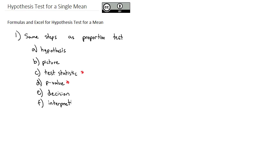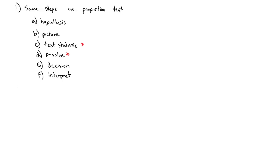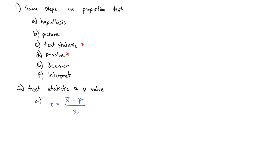The two things that are different with a mean versus a proportion are finding the test statistic and p-value. As we saw with confidence intervals, means generally use a t-distribution instead of a normal distribution. So our test statistic is t equals x-bar minus mu divided by the standard error, where the standard error formula is equal to the standard deviation of the sample divided by the square root of the sample size.